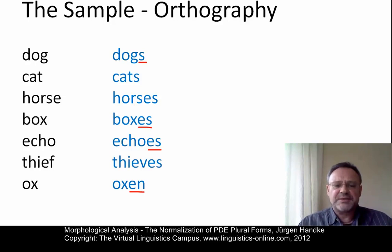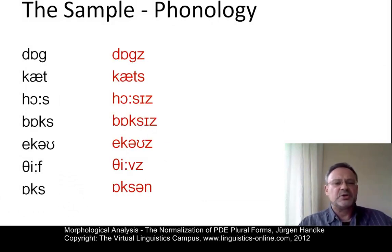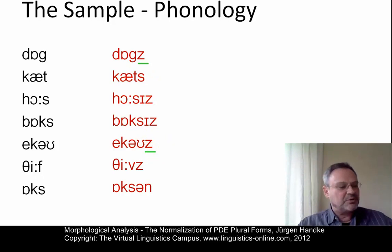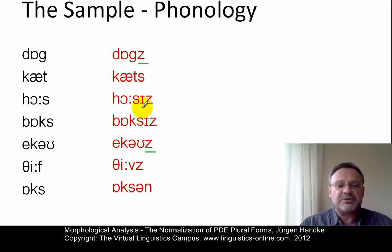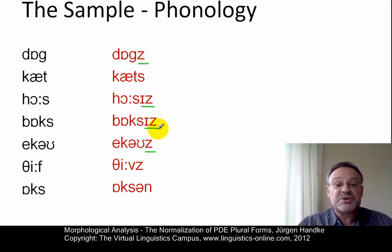That this is not so, and that there is some different condition at work here, can only be shown if we provide a morphological analysis based on phonology. It becomes clear that dog-dogs and echo-echos do not have different endings, but that in both cases a voiced alveolar fricative is added to the singular form to generate the plural. Also, horses and boxes — where you would add S or ES in orthography — have the same affix phonologically.